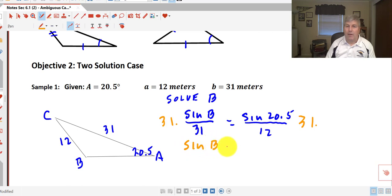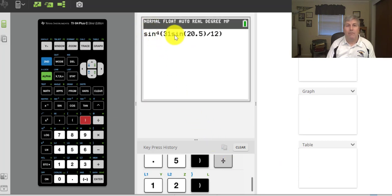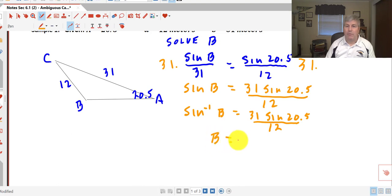I get sine of angle B equals 31 sine of 20.5° all over 12. So I want to put that in my calculator as arc sine equals this particular fraction. Going to my calculator, I do the arc sine of 31 sine of 20.5°, close parenthesis, all divided by 12, close parenthesis again. Make sure we're in degree mode. Hit enter. And I get angle B is going to be 64.8°.